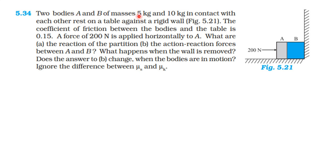Two bodies A and B have masses 5 kg and 10 kg in contact with each other, resting on a table against a rigid wall. The coefficient of friction between the bodies and the table is 0.15. A force of 200 N is applied horizontally to A. What are the reactions of the partition and the action-reaction forces between A and B? What happens when the wall is removed?